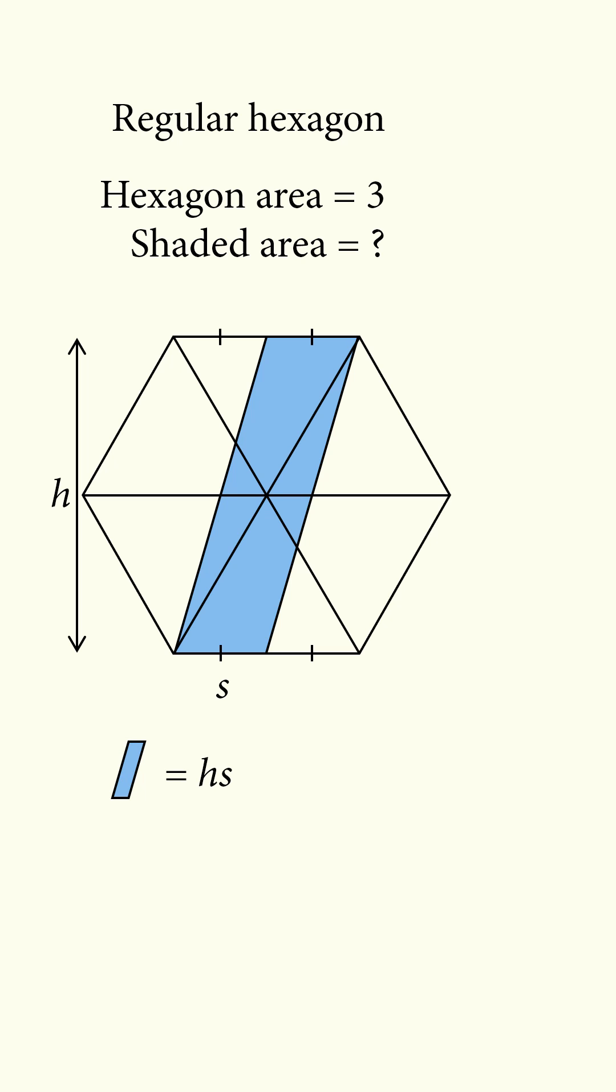Now, divide the hexagon into six equilateral triangles, where each equilateral triangle has height equal to 0.5h and has a base that's equal to 2s. Each equilateral triangle has area that's equal to 0.5hs.